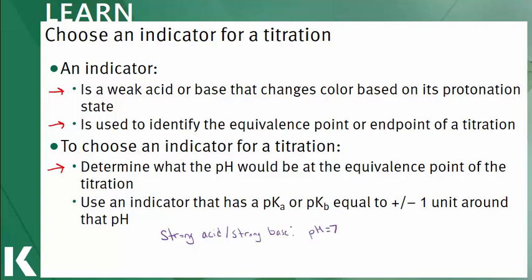For example, a strong acid-strong base titration would have an equivalence point at a pH of 7. But in a weak-strong titration, either a weak acid is titrated with a strong base, resulting in an equivalence point with a pH greater than 7, or a weak base is titrated with a strong acid, and the equivalence point will be a pH less than 7.